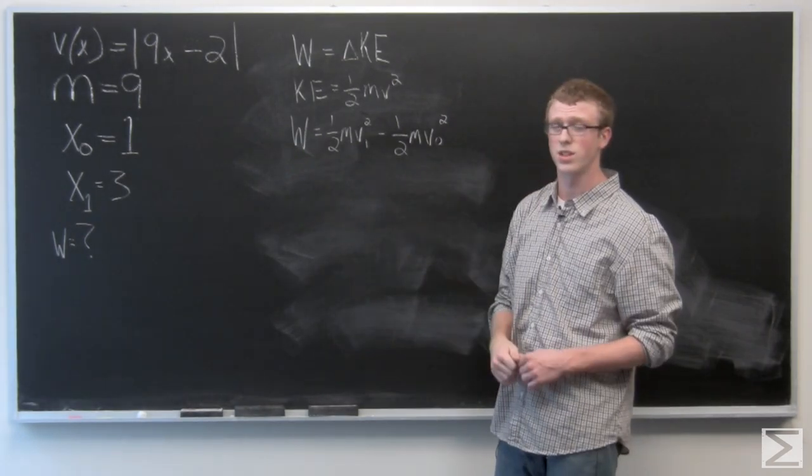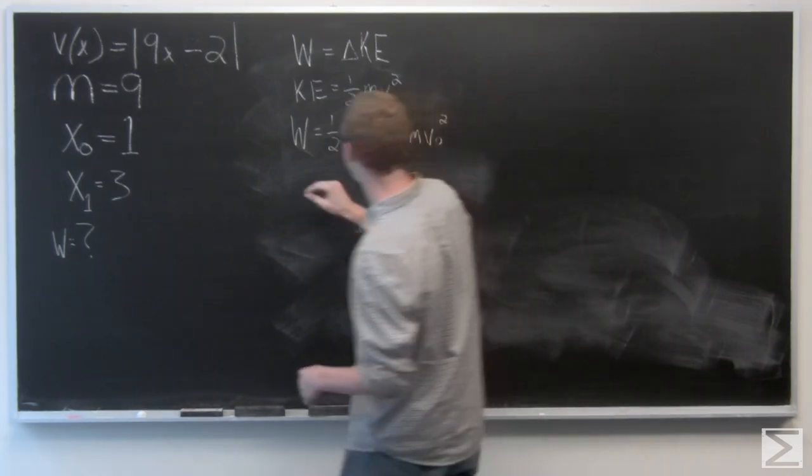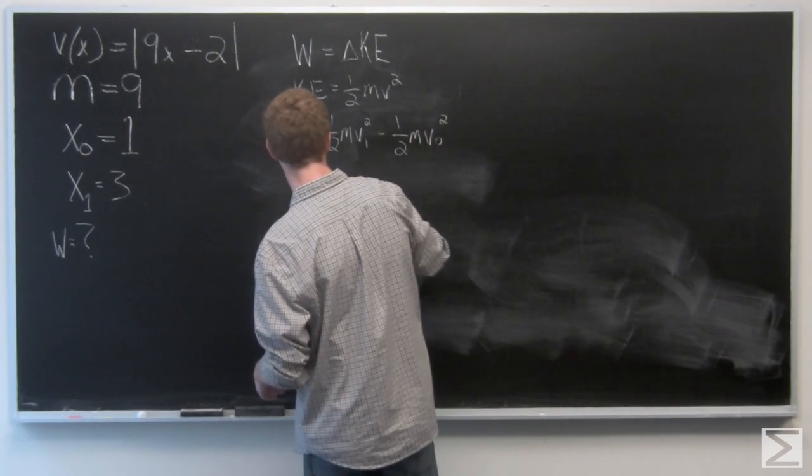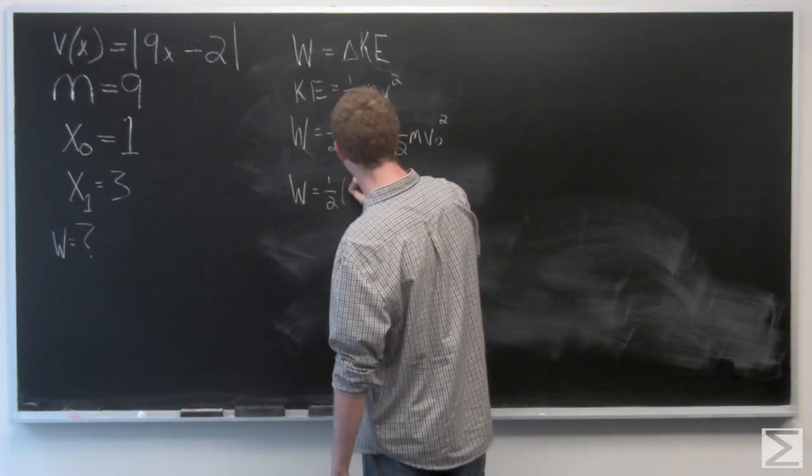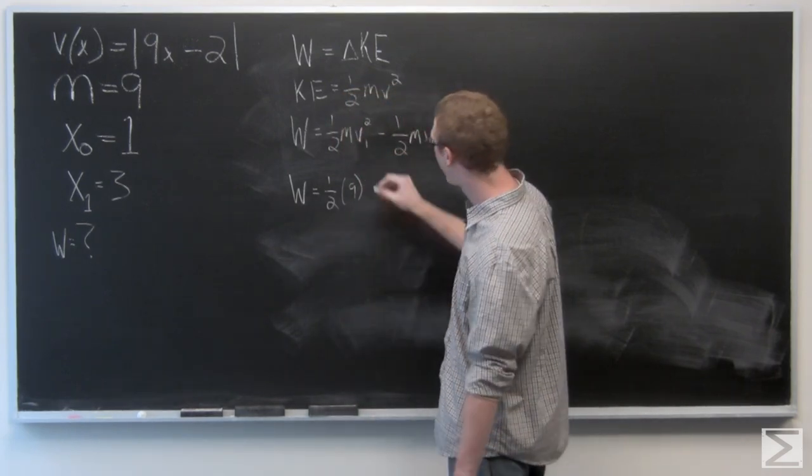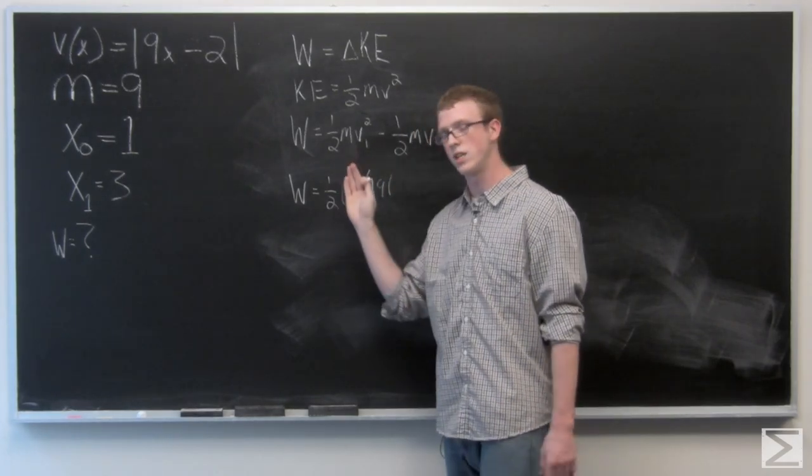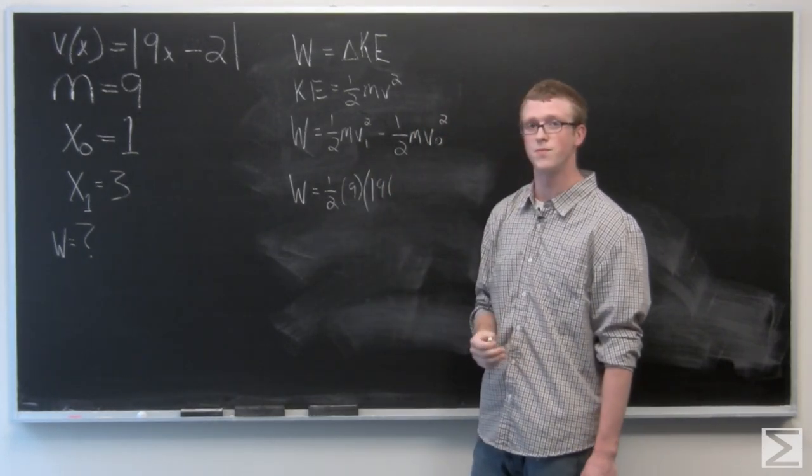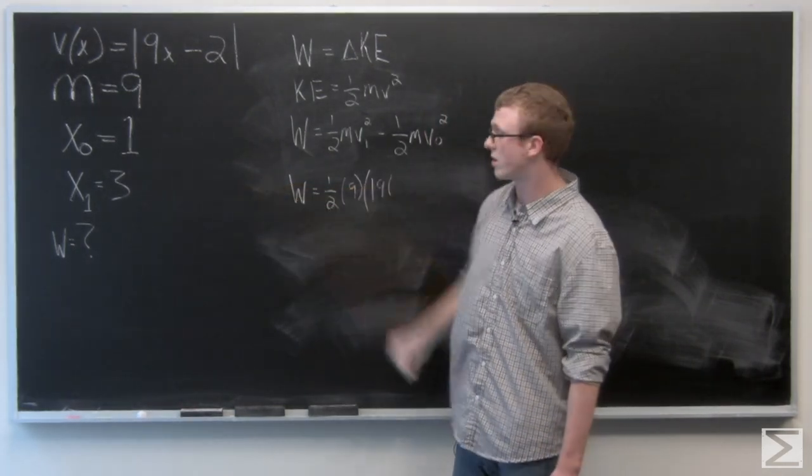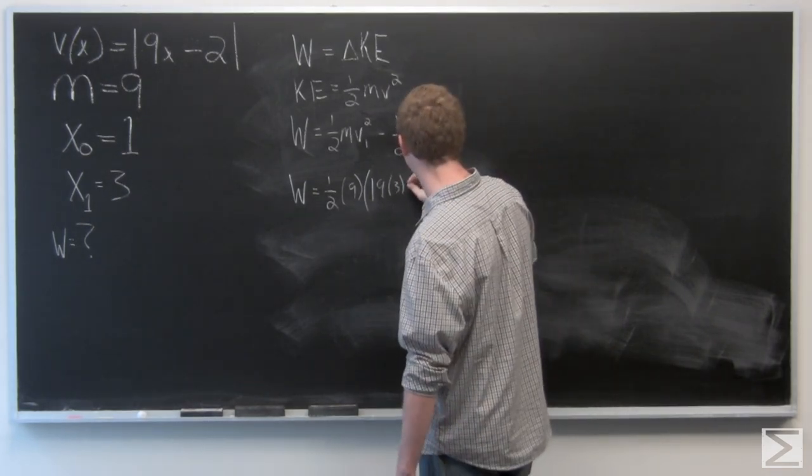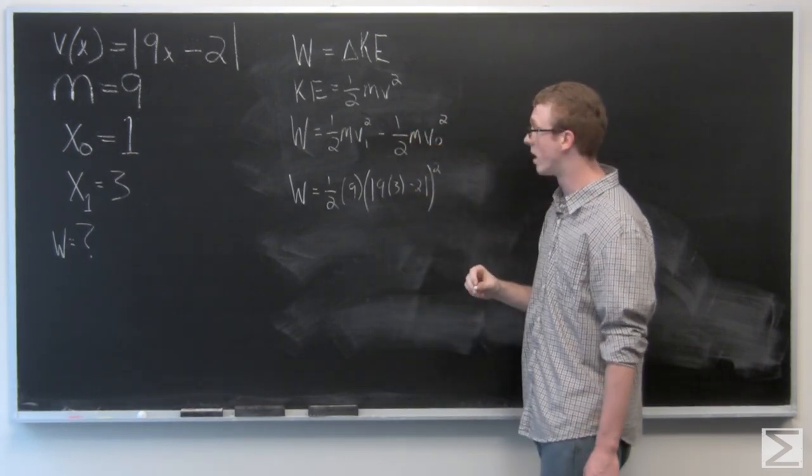We're just going to plug those into the formula that we have for velocity of this particle and figure this out. Here we can plug in 9 for the mass of the object. Now v1 is going to be our final velocity because we're looking for the velocity at the finishing position. So the position here is going to be 3, and now we're going to find the initial velocity.